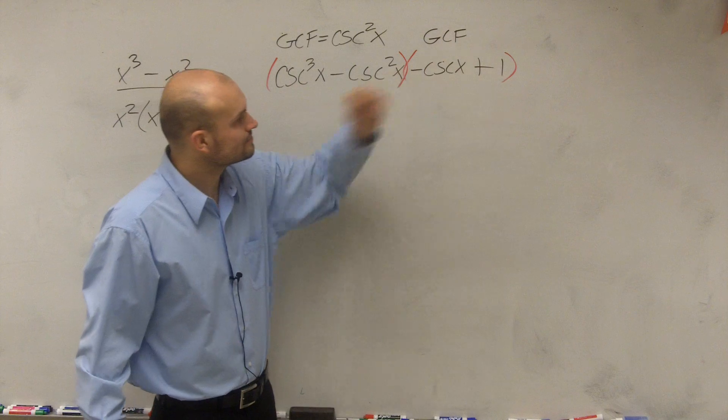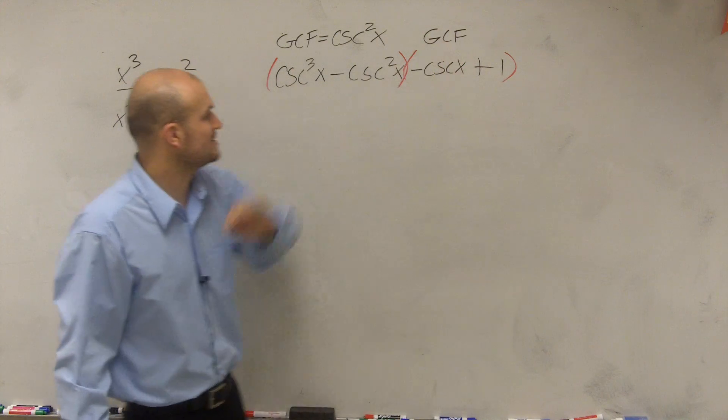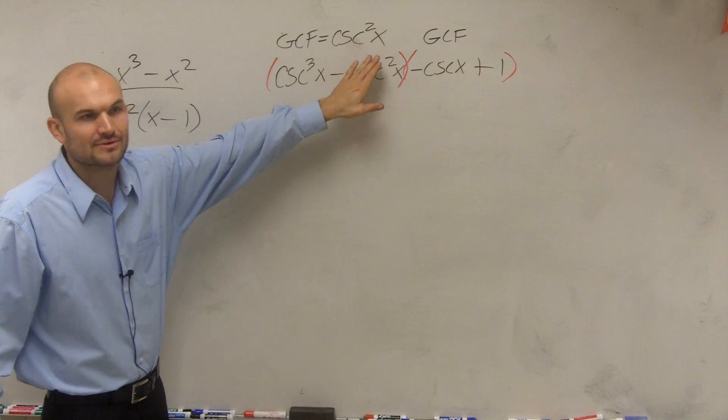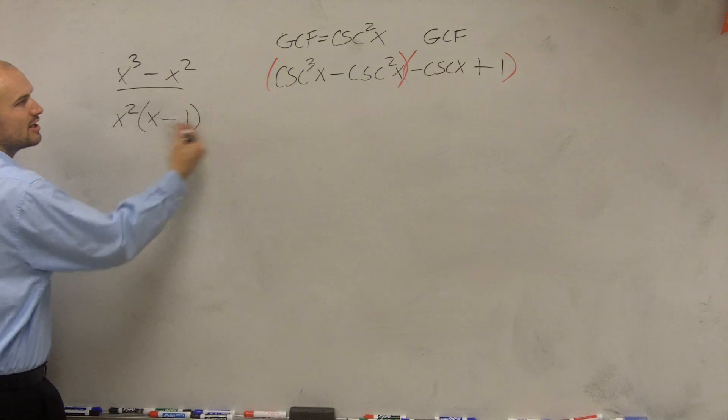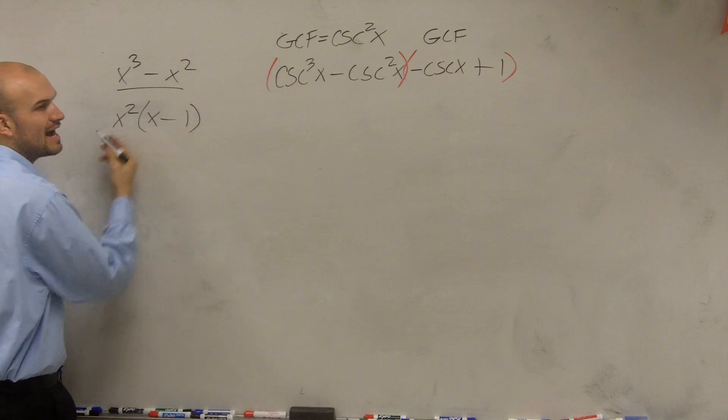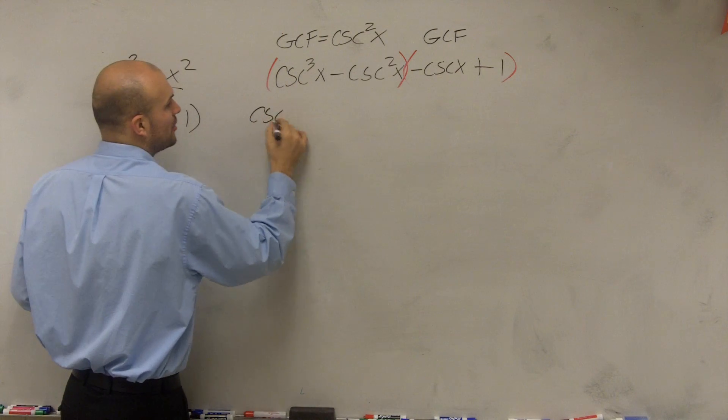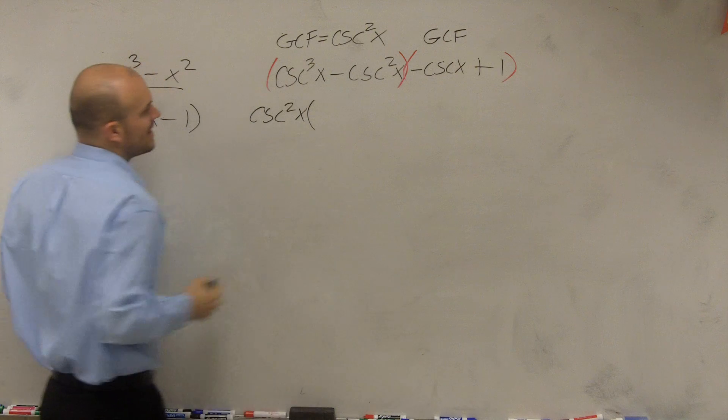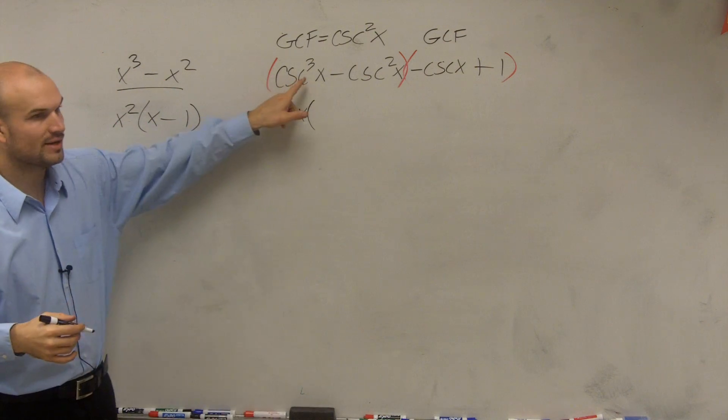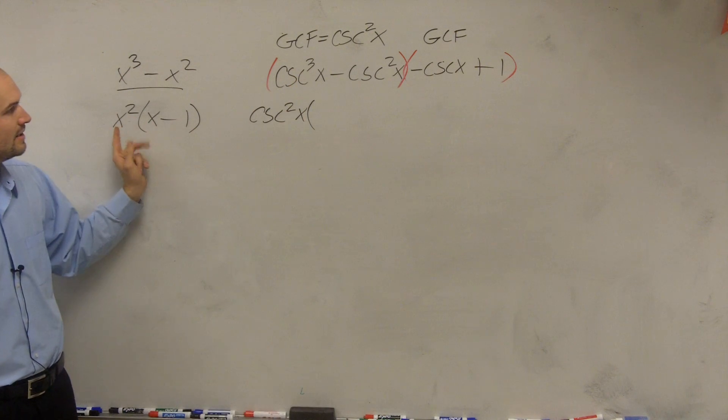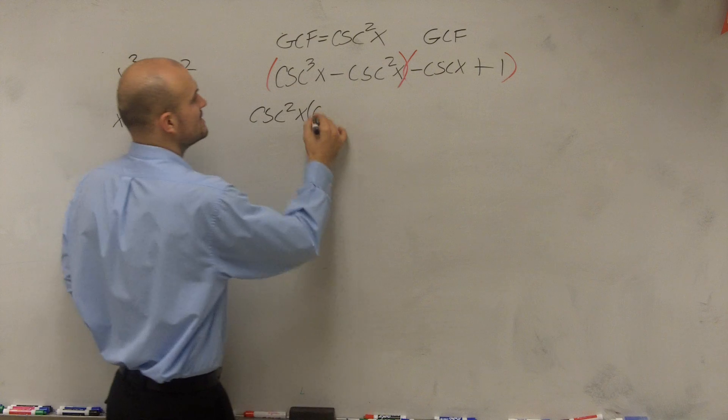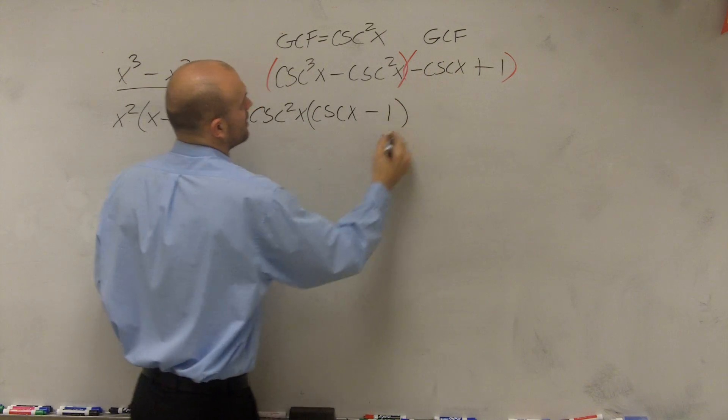Cosecant squared of x. All right, and then for this term, actually, I'll get to that in a second. So let's factor this out. So just like I did here, when you take your GCF, you divide it out of both terms. So I'm going to divide both terms by csc²x. And that's going to leave me with, just like how I did it here, that's going to leave me with (cscx - 1).